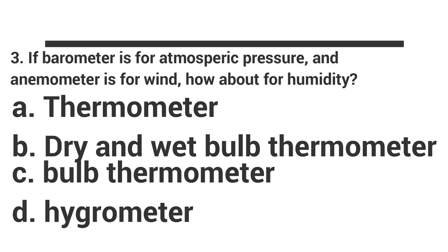For the last number: If barometer is for atmospheric pressure and anemometer is for wind, how about for humidity? A. Thermometer. B. Dry and wet bulb thermometer. C. Bulb thermometer. D. Hygrometer.